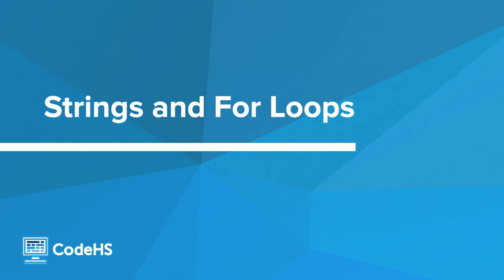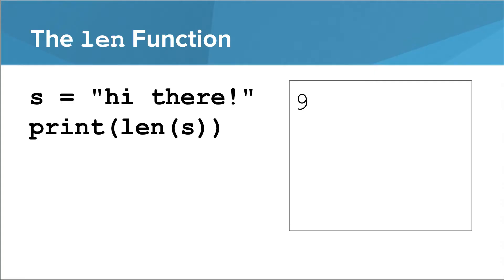This video covers a couple of quick tricks to go through a string one character at a time using a for loop. As a prerequisite for this first trick, you'll need to understand the len function. This function takes a single argument and returns the length of that argument. For now, assume that the argument must be a string. Later, you'll learn how to use len with other things.